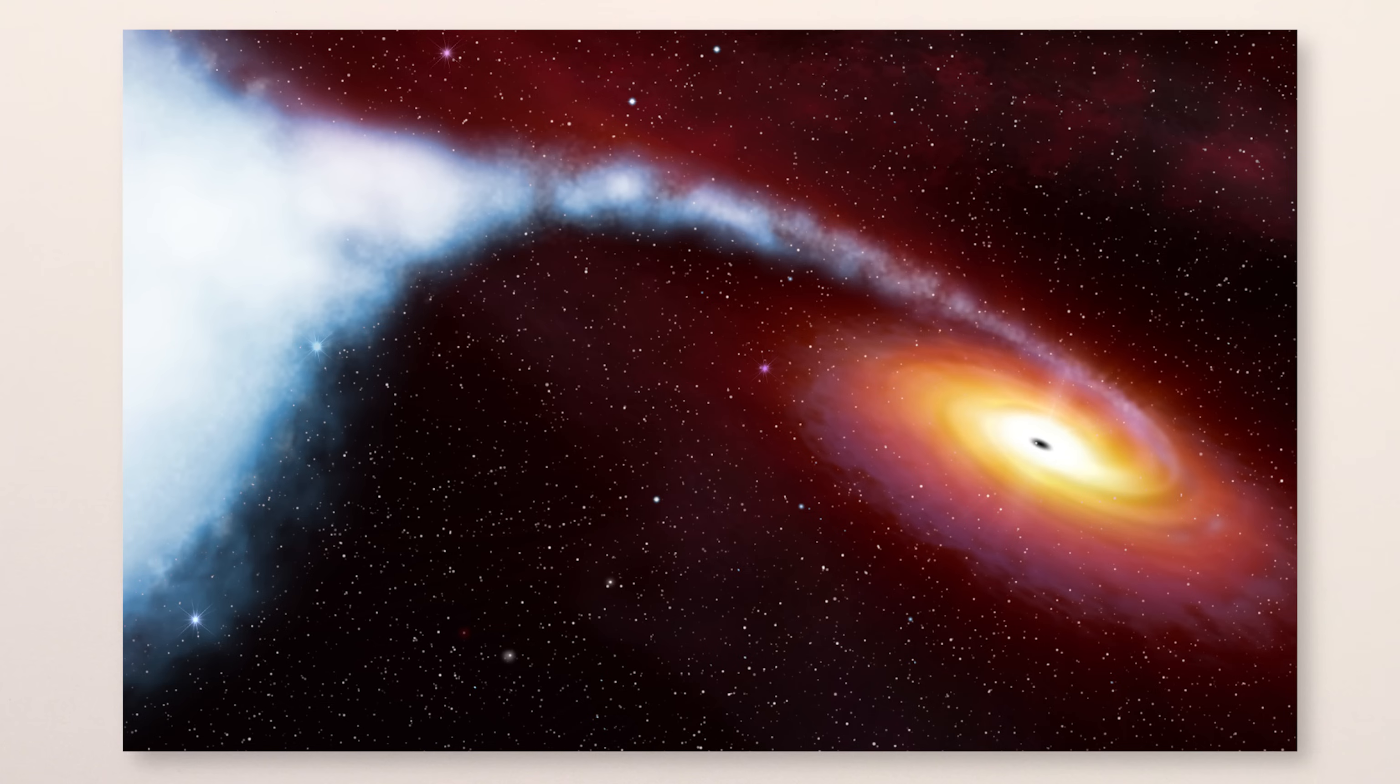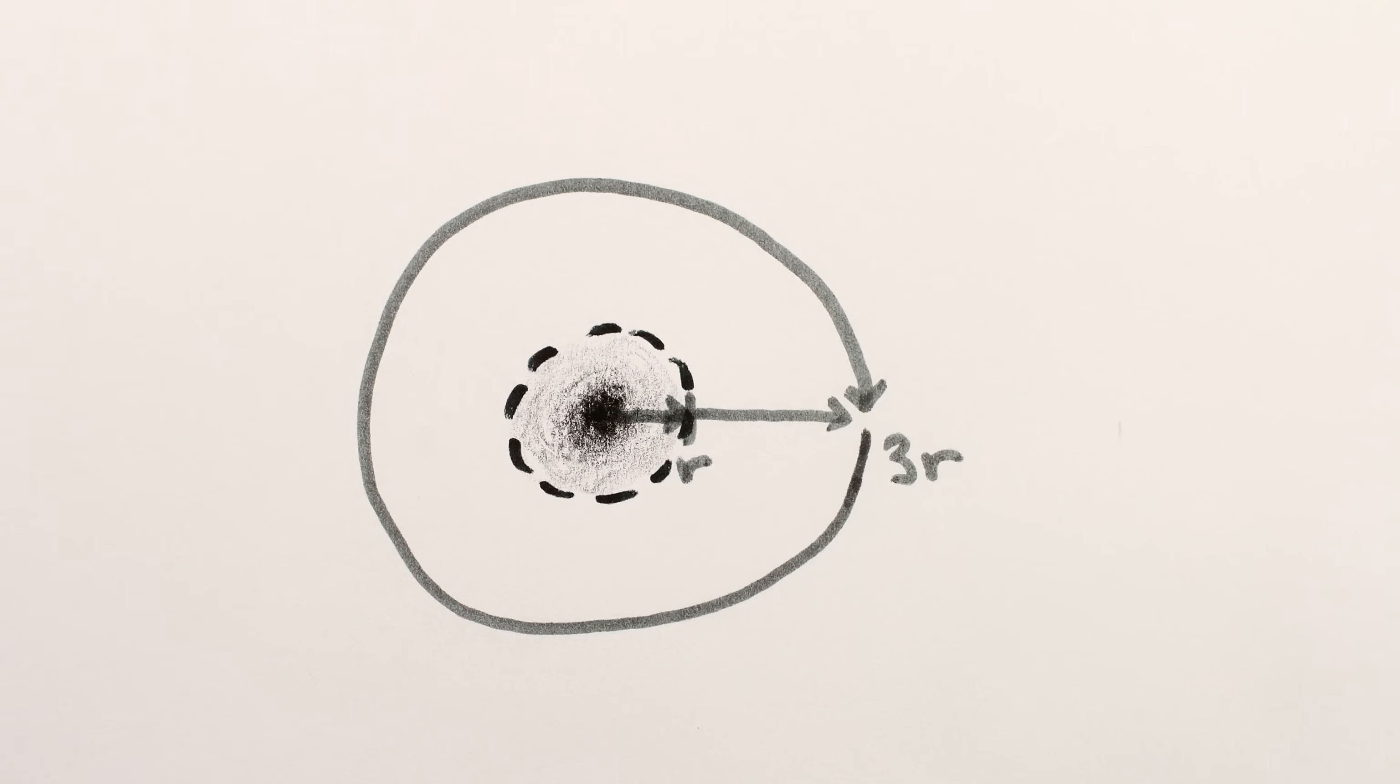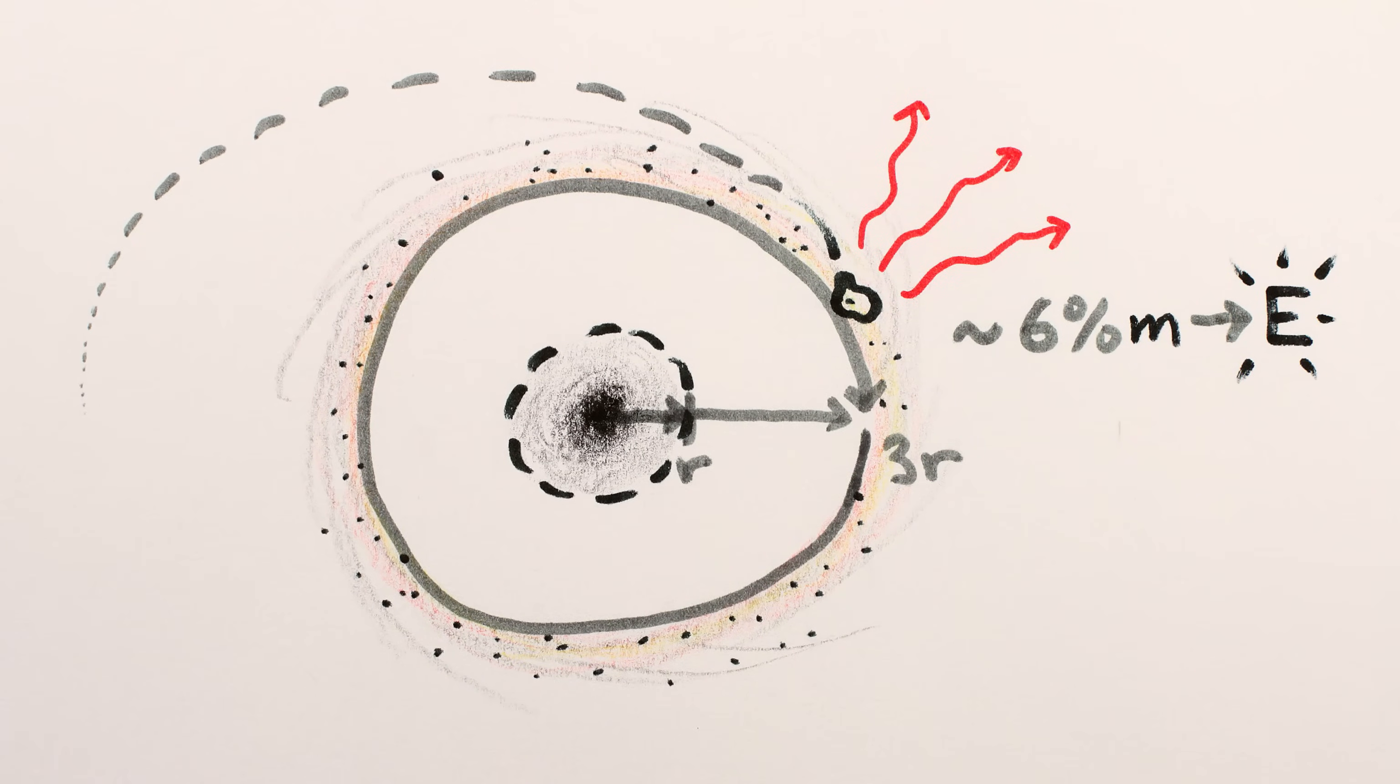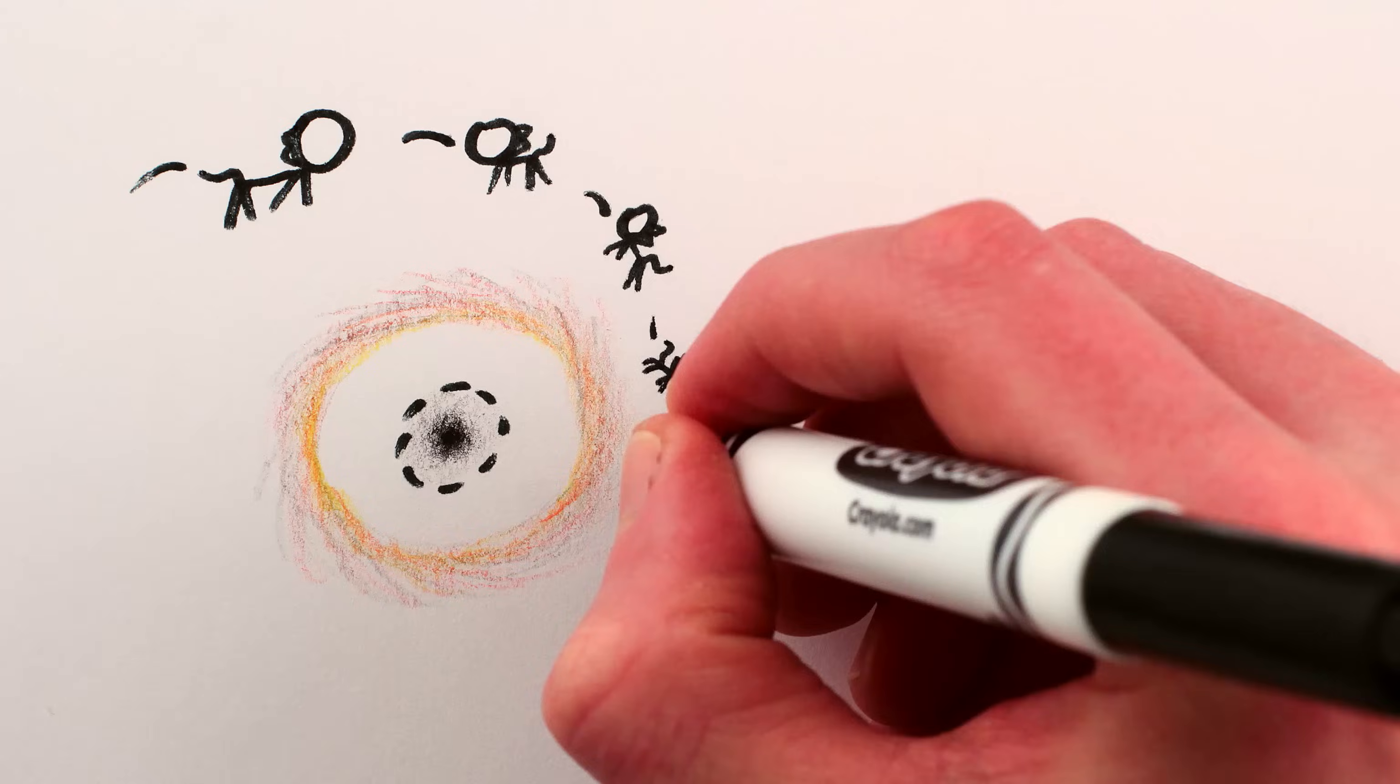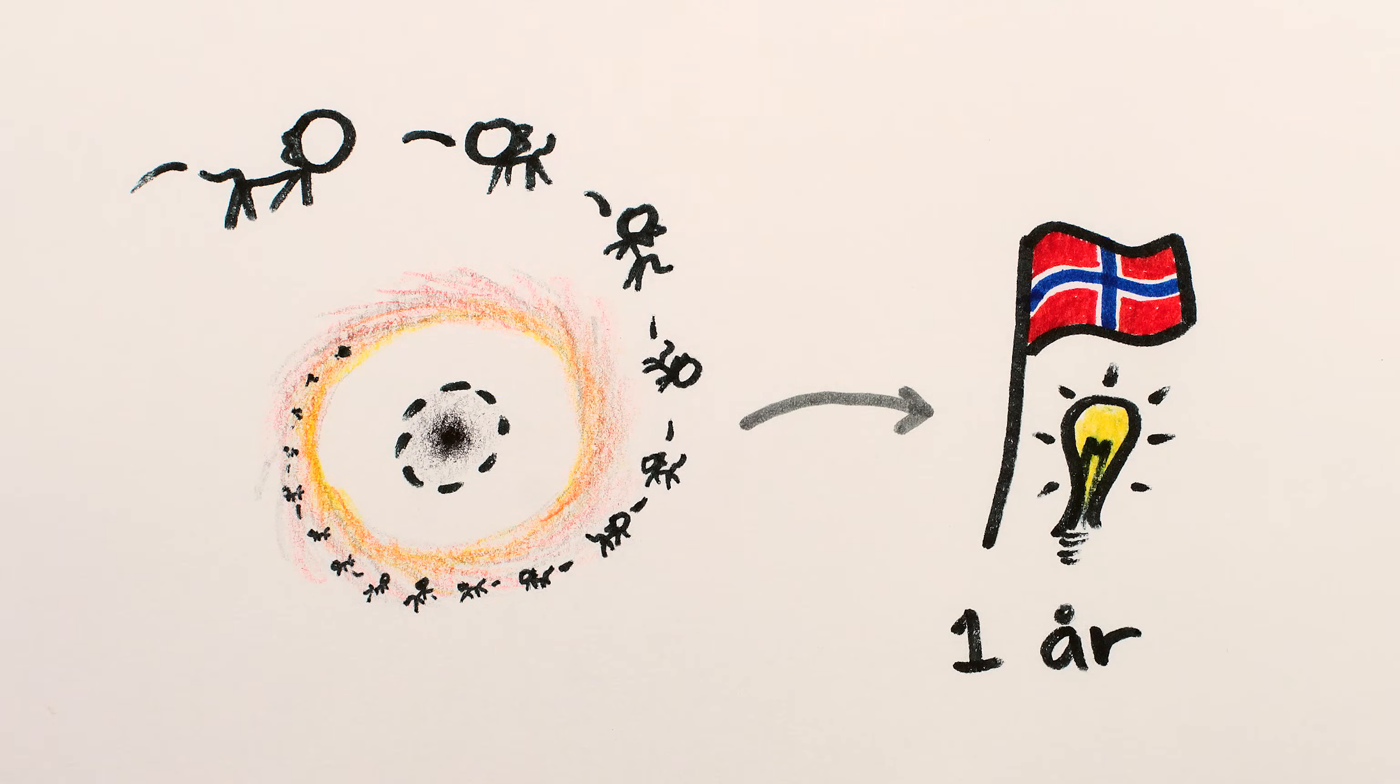So how good are they at converting mass to energy? Well, for a non-rotating black hole, the innermost possible circular orbit is actually three times farther out than the event horizon, and in order to spiral into that point, an object has to convert around 6% of its mass into energy radiated away to the outside universe. After that point, if it loses any more energy, it'll plunge down into the black hole, and no more energy can be extracted. But at this 6% mass to energy conversion rate, you'd only need to throw 17 cats into a black hole to power Norway for a year.